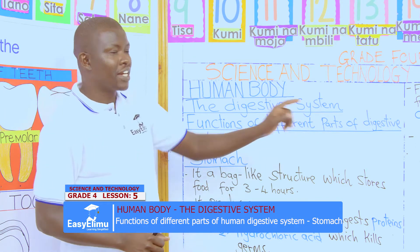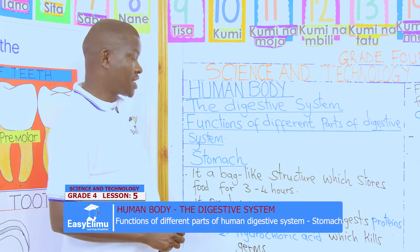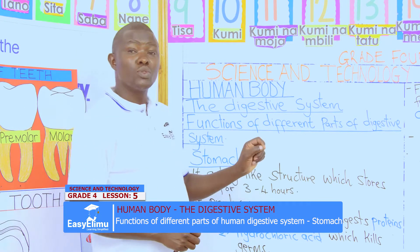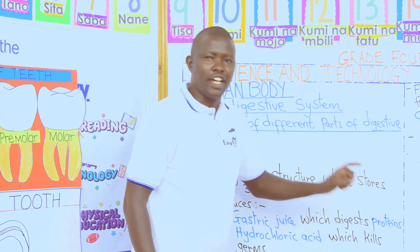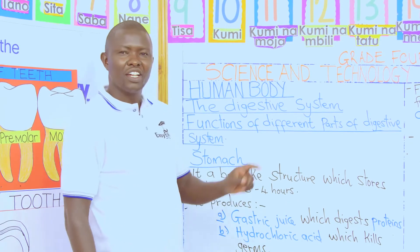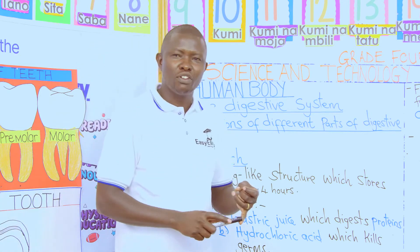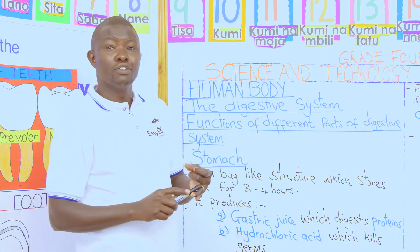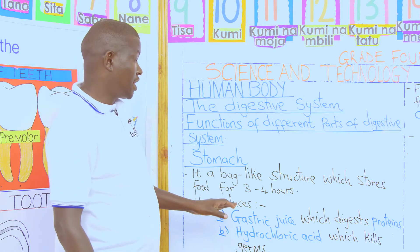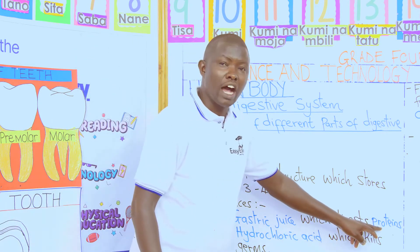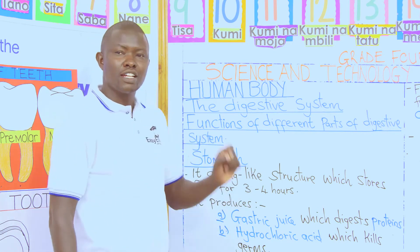Then number two, the wall of the stomach also produces gastric juice. This gastric juice mixes with the food and digests the part of the food called proteins. Remember, in the lower classes we talked about the types of food: the energy-giving food, the protective foods, and the bodybuilding food — and the bodybuilding foods are the proteins. So, the proteins are digested in the stomach.